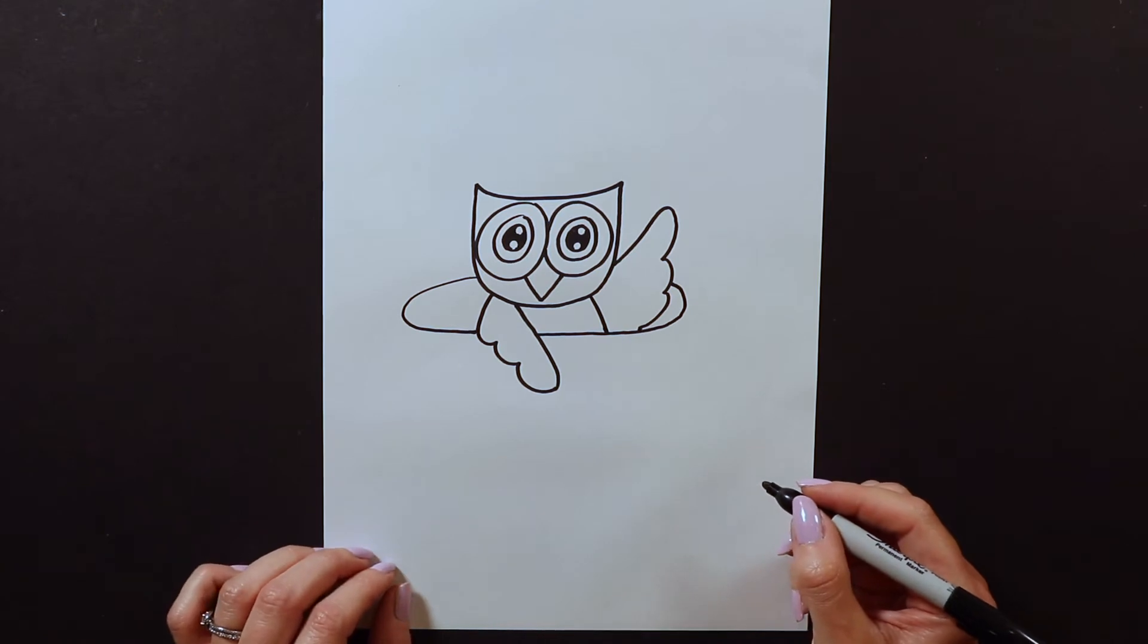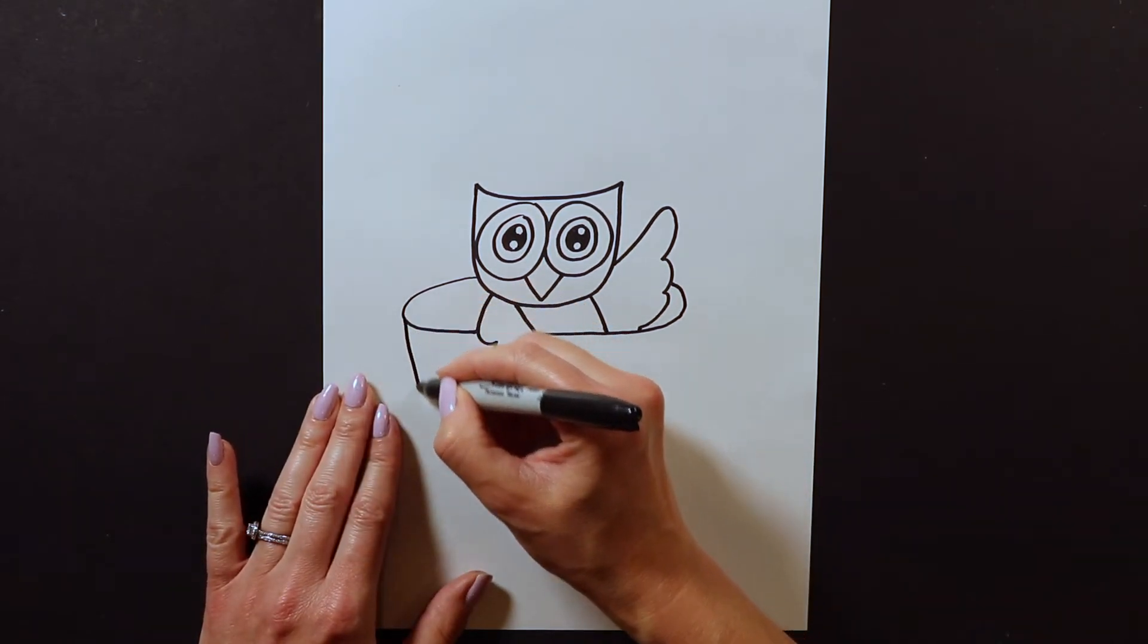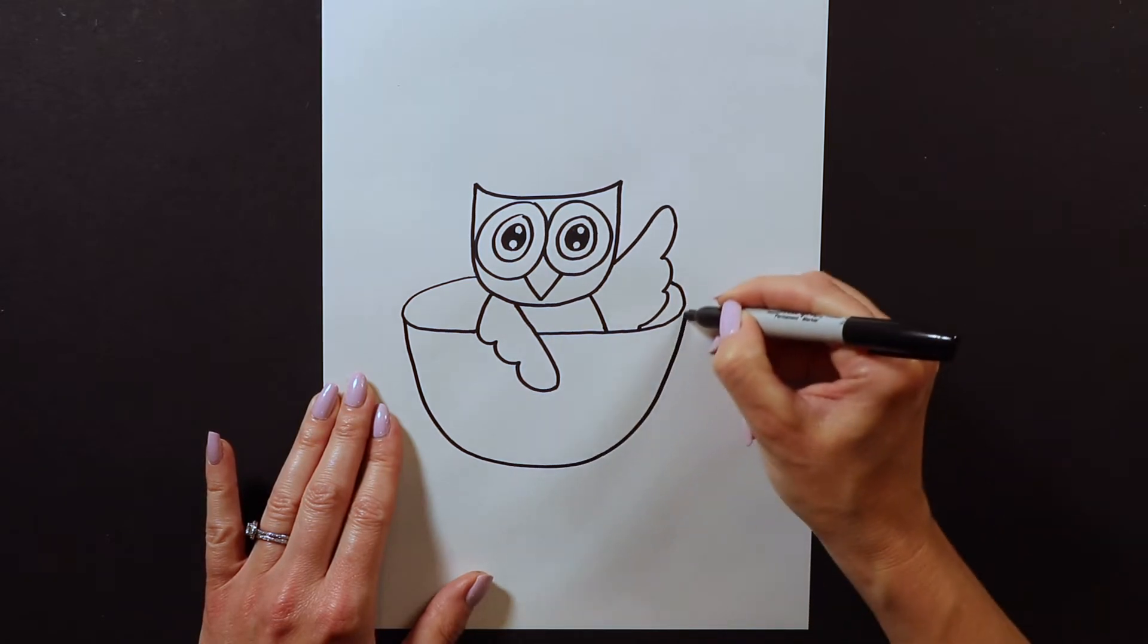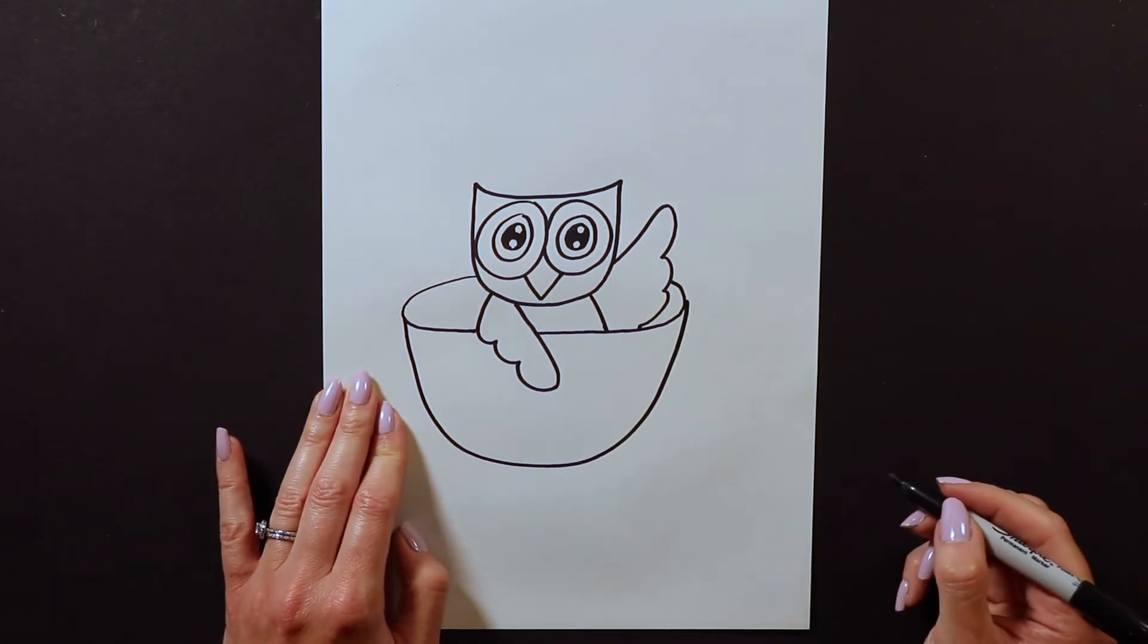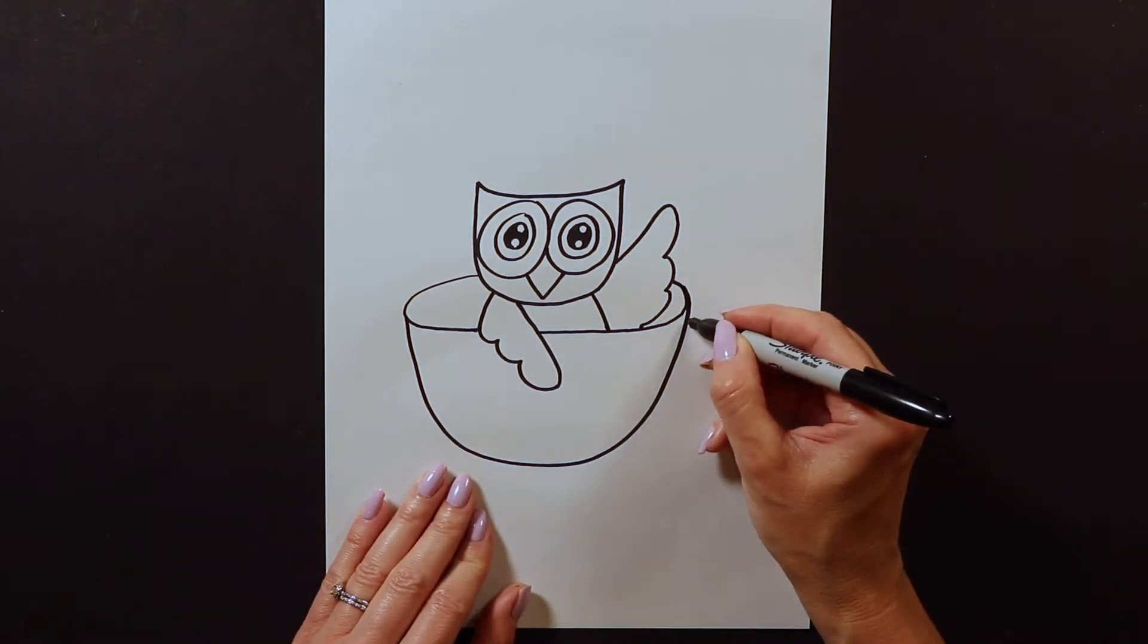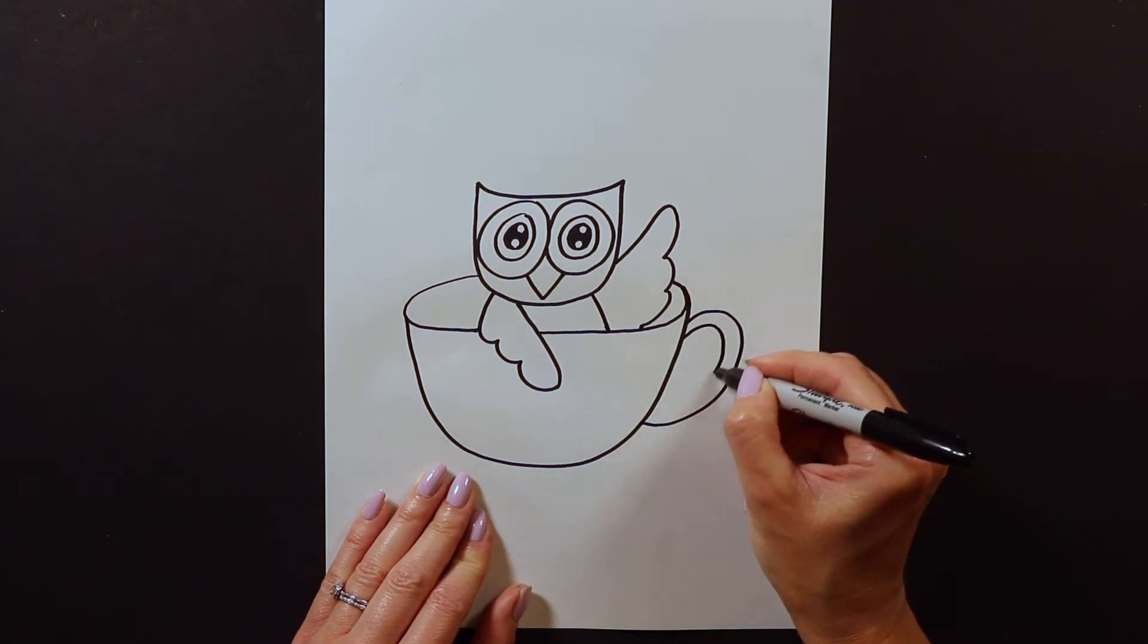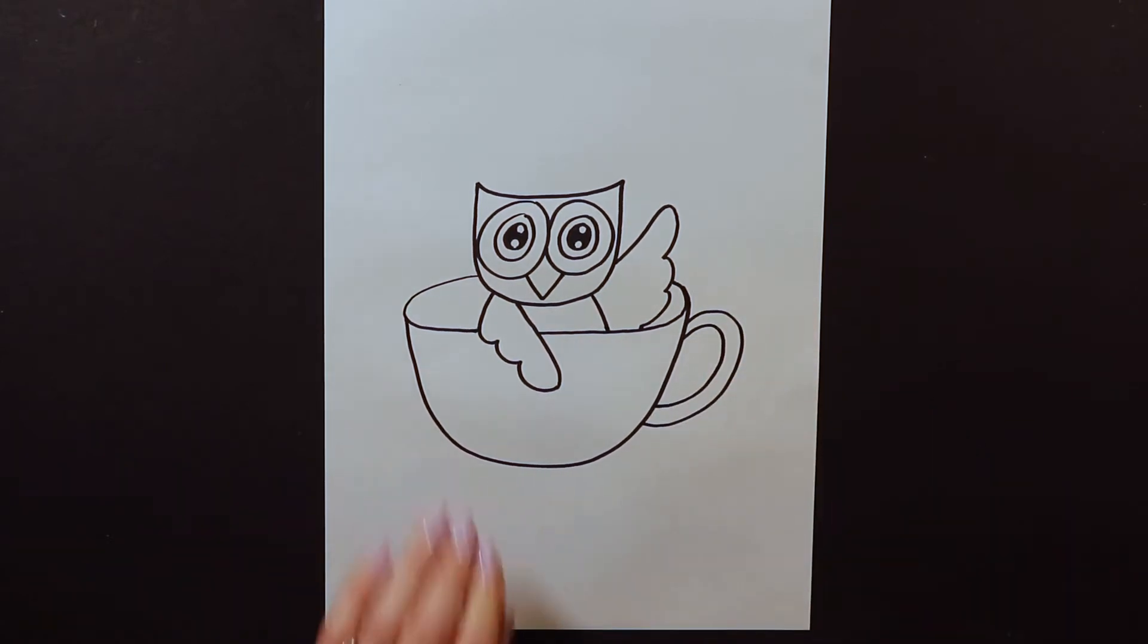After you have that part done we're gonna draw the rest of our teacup and that's easy because it's just a letter U. That's it. Then to make it look like a teacup and not a bowl we got to have a handle. So I'm gonna draw two curves for the handle of our teacup.